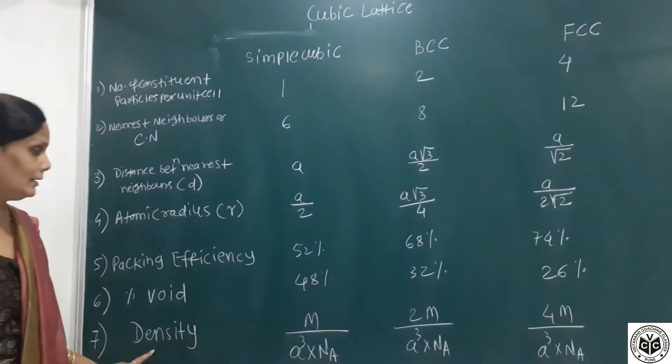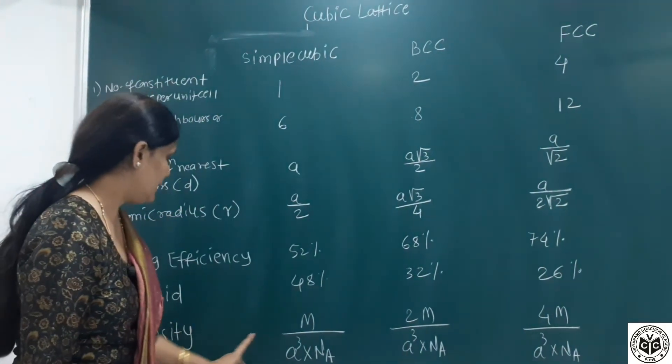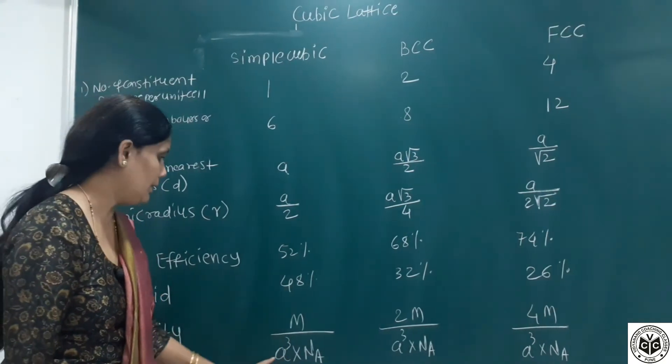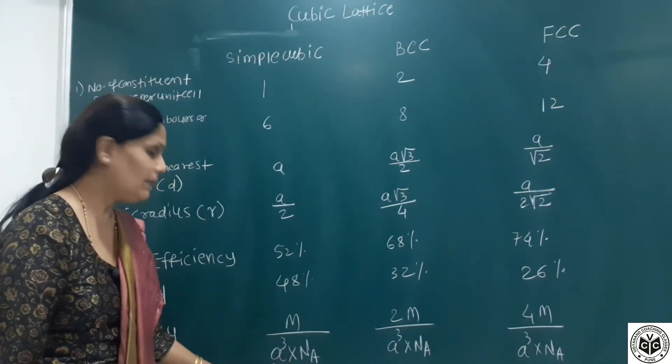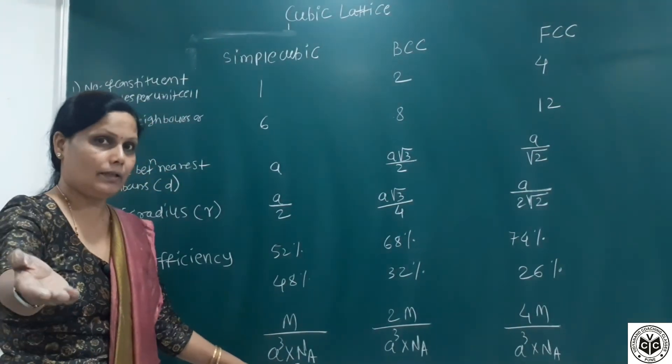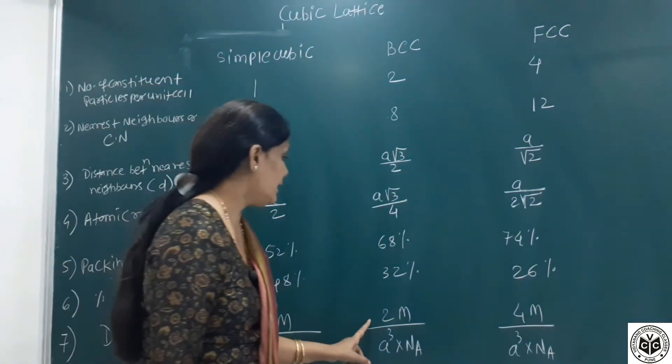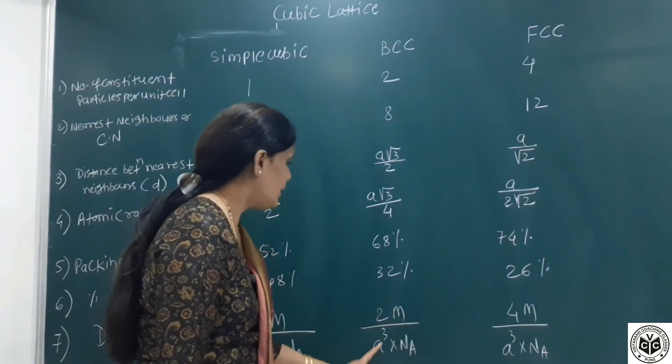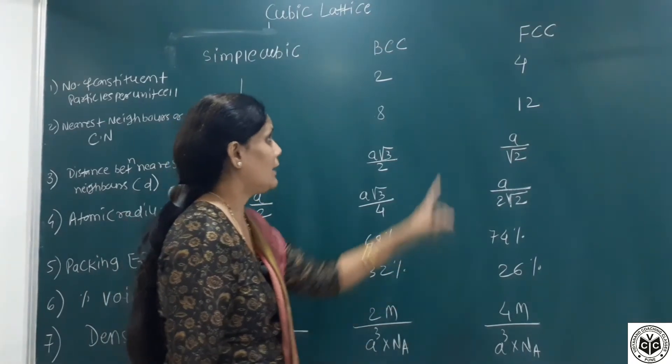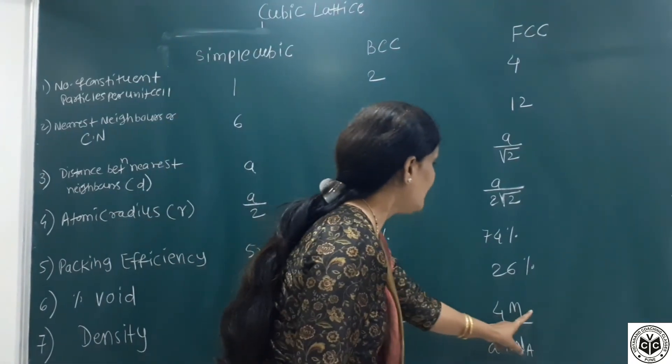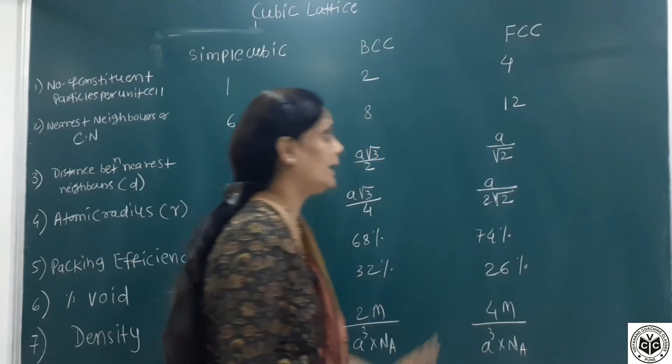Density formula: for simple cubic, density is M upon A cube times NA. M is edge length and NA is Avogadro number. For BCC, twice M upon A cube times NA. For FCC, 4 times M upon A cube times NA.